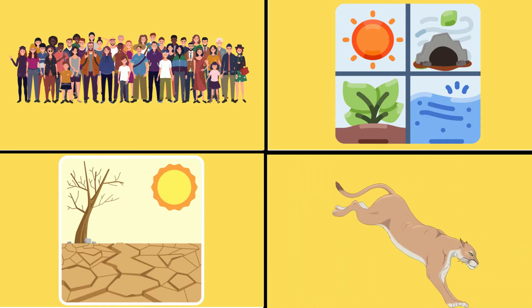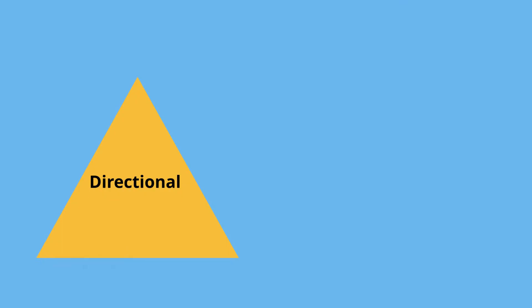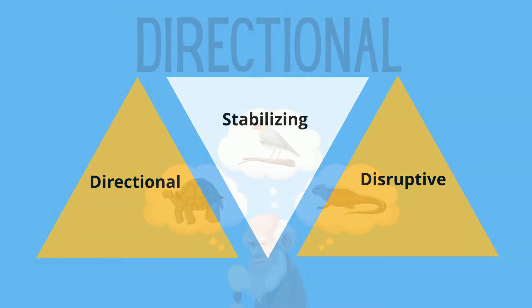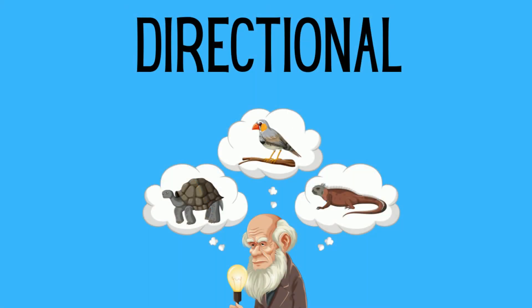There are three types of natural selection: directional, stabilizing, and disruptive. Directional selection occurs when one or two of a trait's extremes are selected.